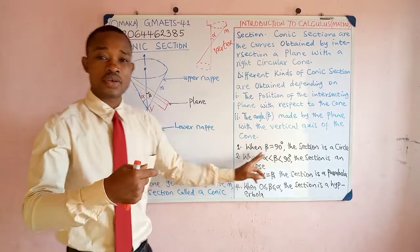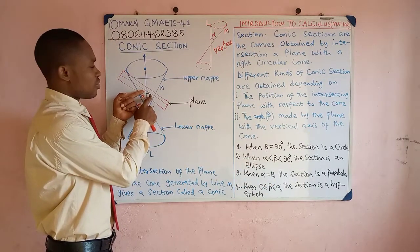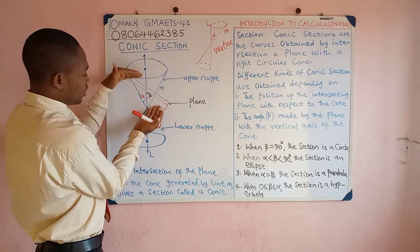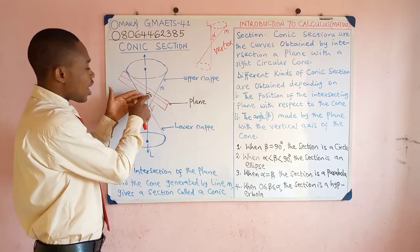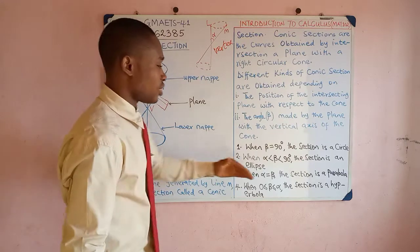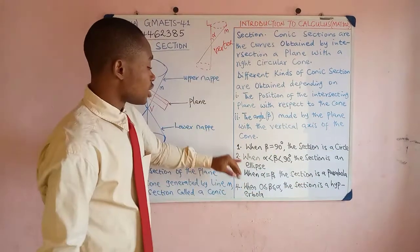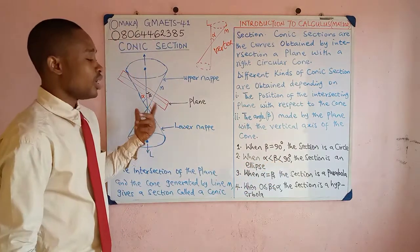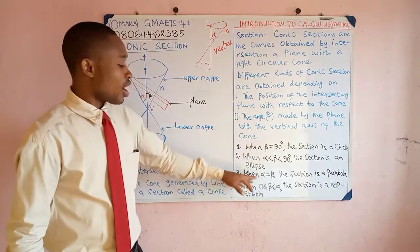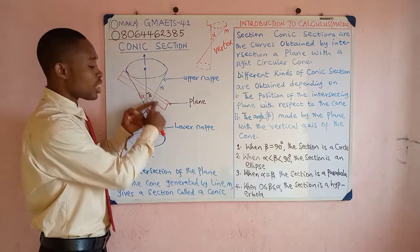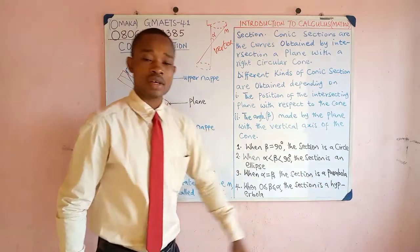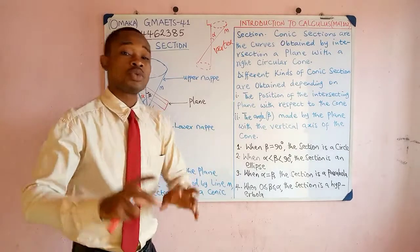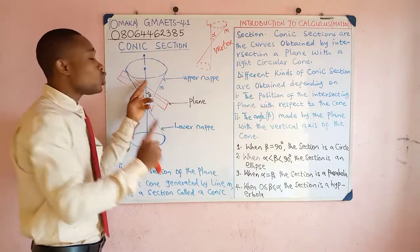When beta is equal to 90 degrees — that is, the plane is horizontal — then the section is going to be a circle. Then in case two, when alpha is less than beta and beta is less than 90 degrees, we get an ellipse. And then when alpha is equal to beta, the section is called a parabola. These first three kinds of conic sections are formed when this plane cuts across only one nappe.